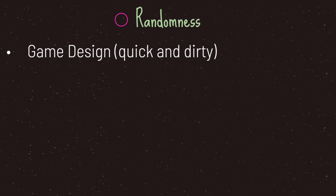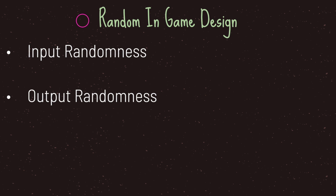Hello and welcome to another episode in the Godot Basics tutorial series. In this episode we will be taking a look at randomness. As a game designer or someone who thinks about game designing, we can categorize randomness in games into two categories. The first category is called input randomness and the second category is called output randomness.